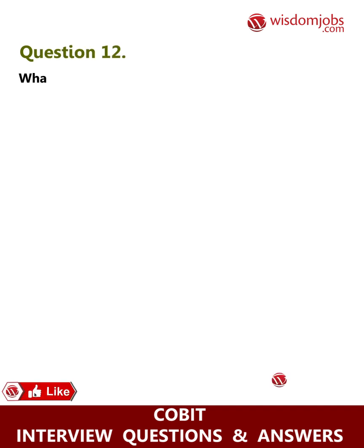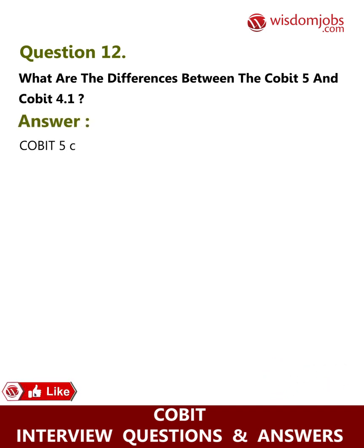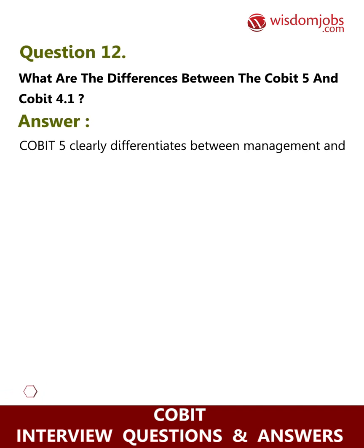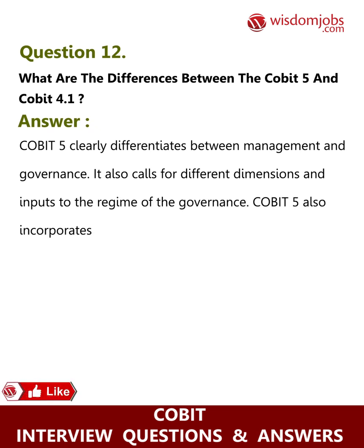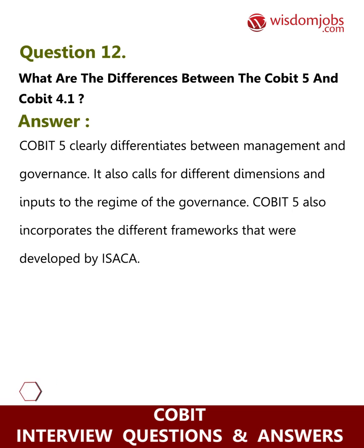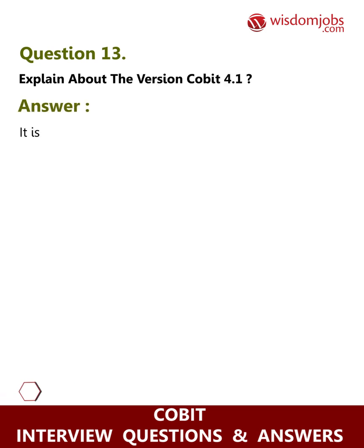Question 12: What are the differences between COBIT 5 and COBIT 4.1? Answer: COBIT 5 clearly differentiates between management and governance. It also calls for different dimensions and inputs to the regime of governance. COBIT 5 also incorporates the different frameworks that were developed by ISACA.